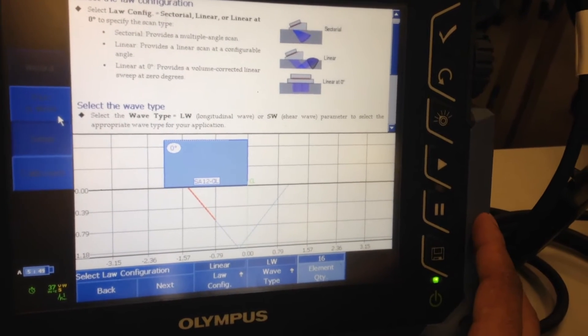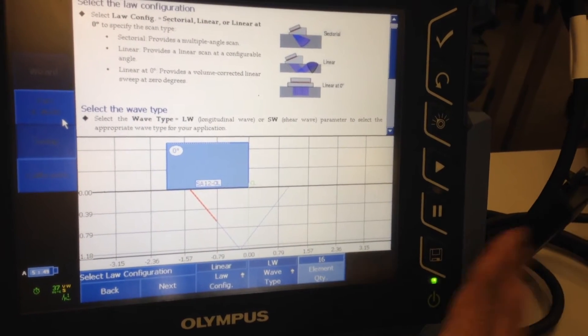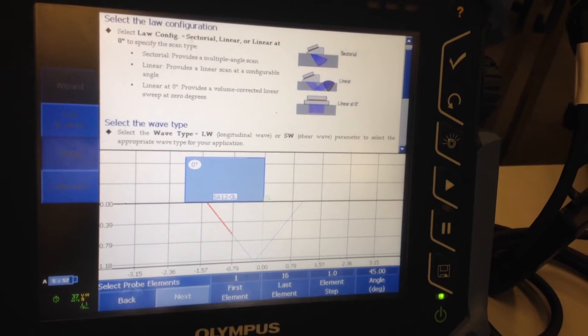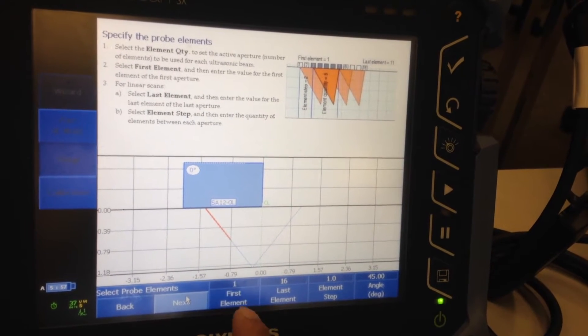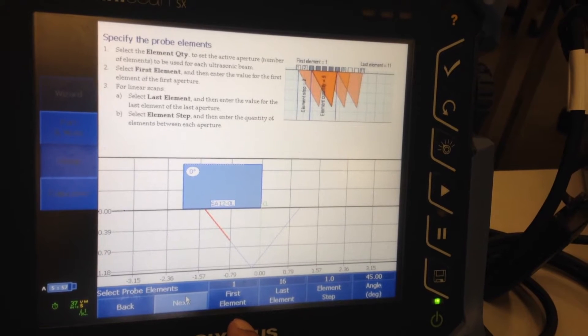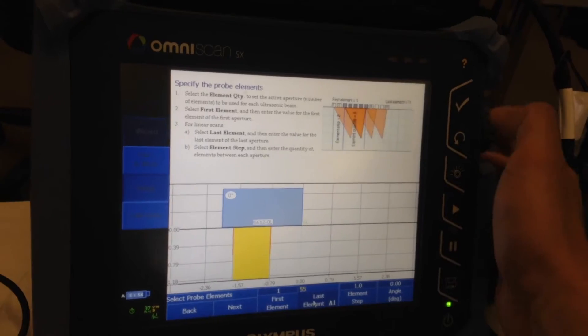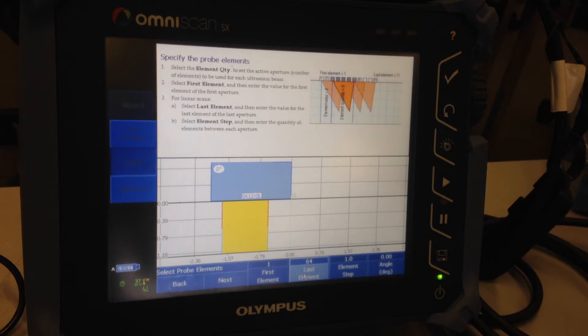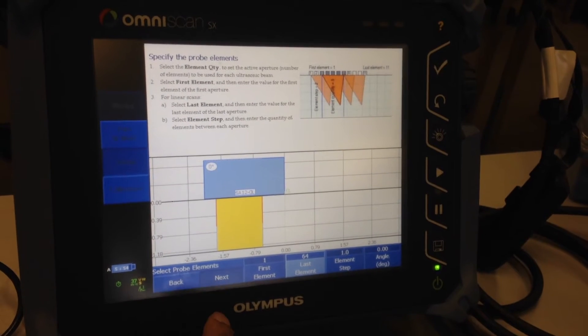First element one, last element used all the way up to 64. Also watch the angle, in this case it's zero, then click next.